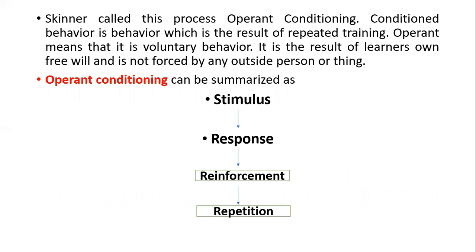Operant means voluntary behavior. It is the result of the learner's own free will and is not forced by any outside person. It means the learner is the individual who changes and adjusts according to favorable circumstances. This learning is what we call behaviorism — change in behavior, conditioning of behavior, and it is voluntary.